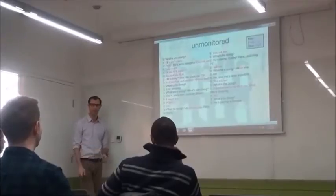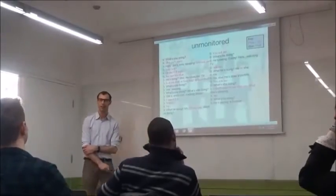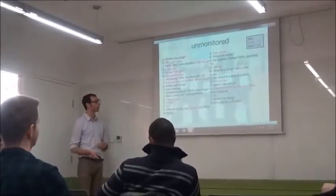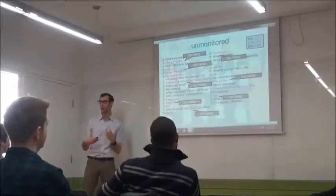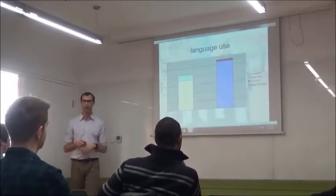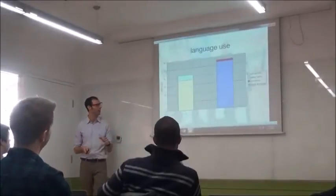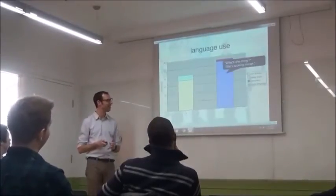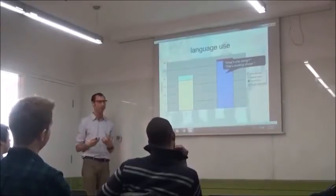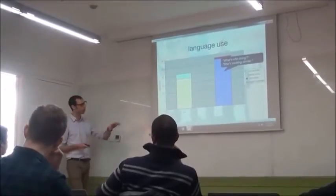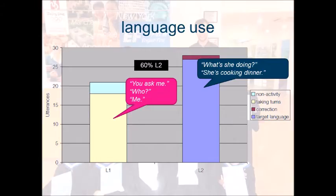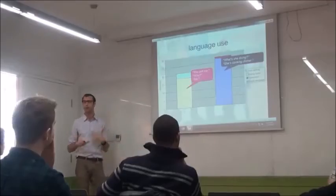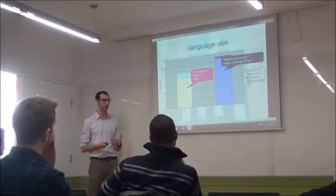Looking at the transcript, the pattern was that procedural talk — reminders of how to play the game, turn-taking like 'it's you', 'it's me', 'who's going next' — was all done in Chinese, while the actual target language was in English. I thought this was really interesting because I always assumed students used Chinese because the English was too difficult. But the English here — present continuous tense — was actually more complicated than the simple one-word utterances in Chinese. This made me reassess why students use different languages for different purposes.